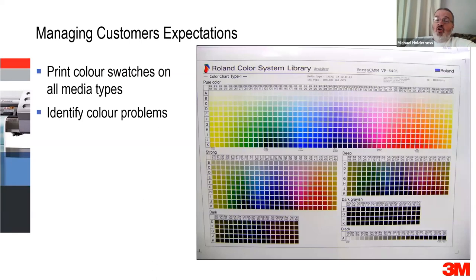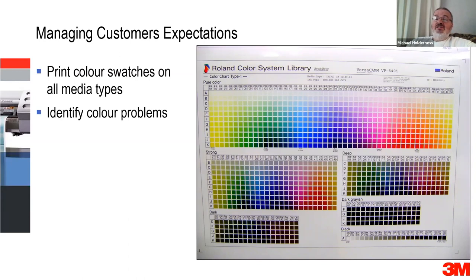If your customer doesn't actually know what color they want, print a color swatch. Flop it out on the bench and say pick a color. If they then pick a color from there, your problems are solved because you've produced this color already on your printer — you know you can produce it. Using something like a color chart does solve a lot of problems because you know you can reproduce that color and the customer is picking a color you know you can produce.